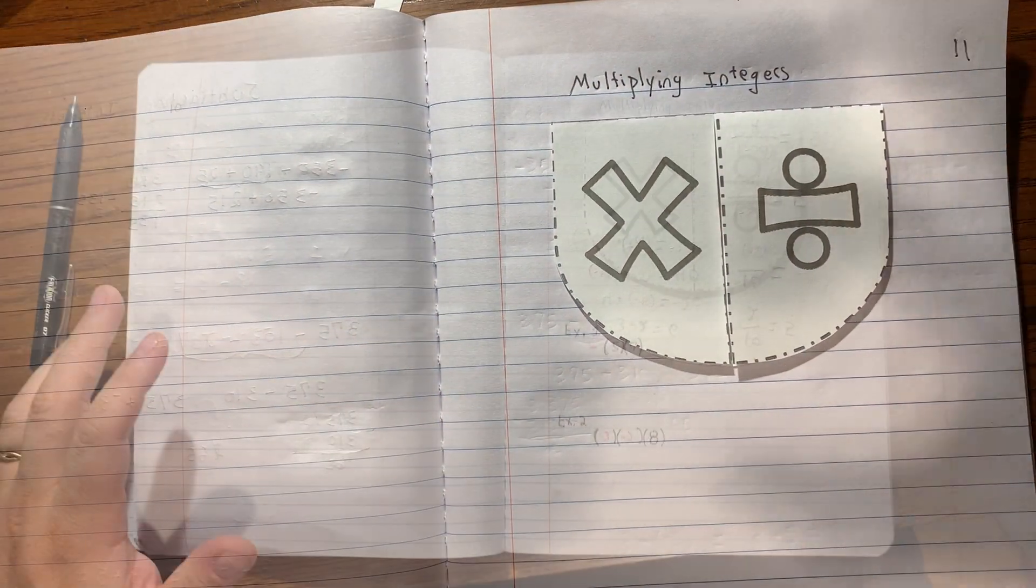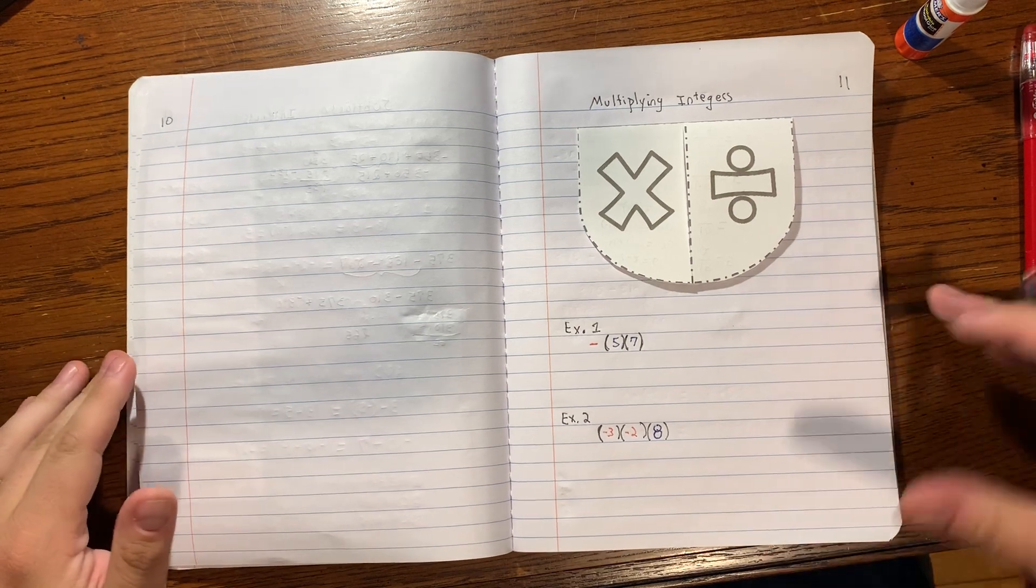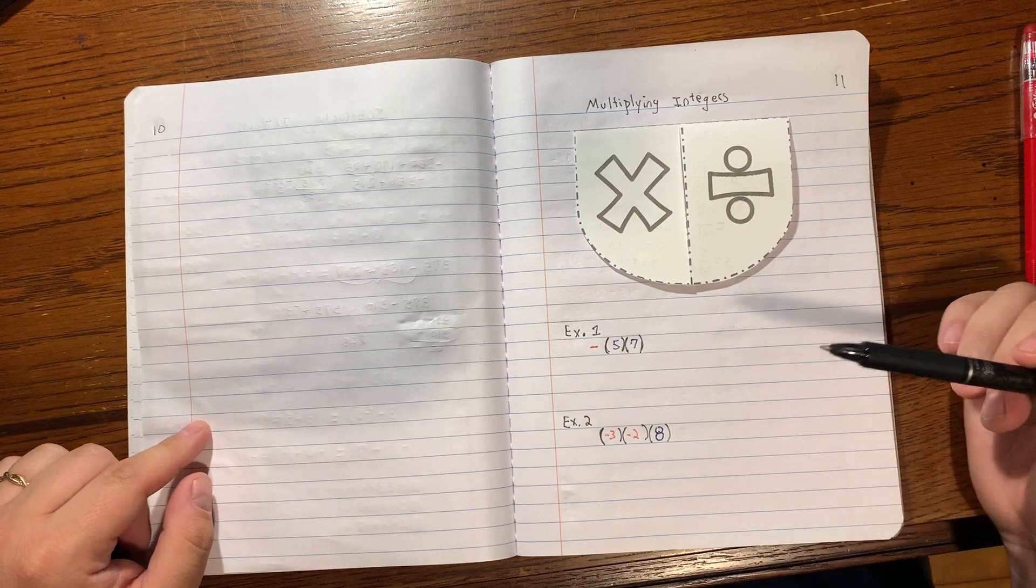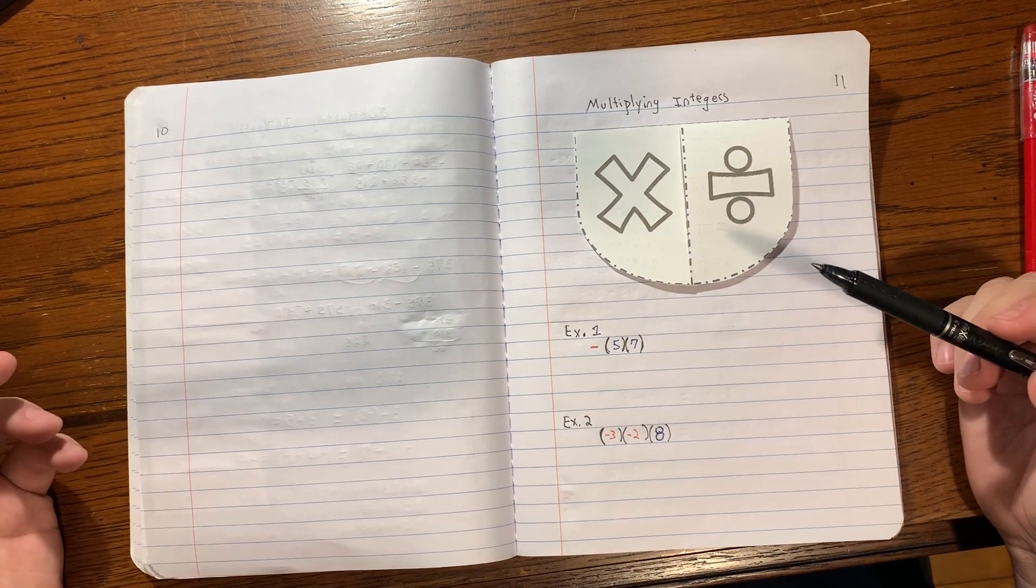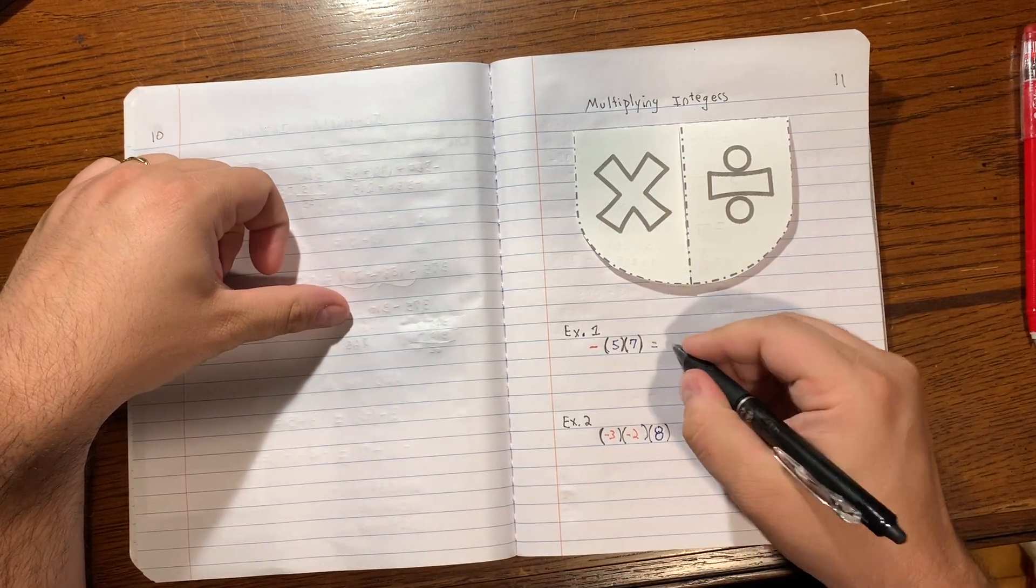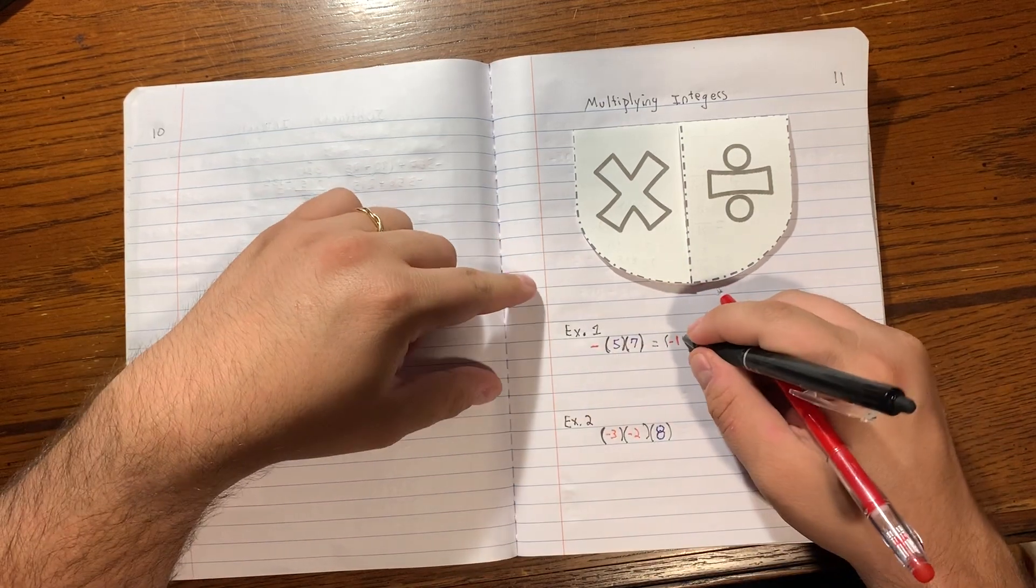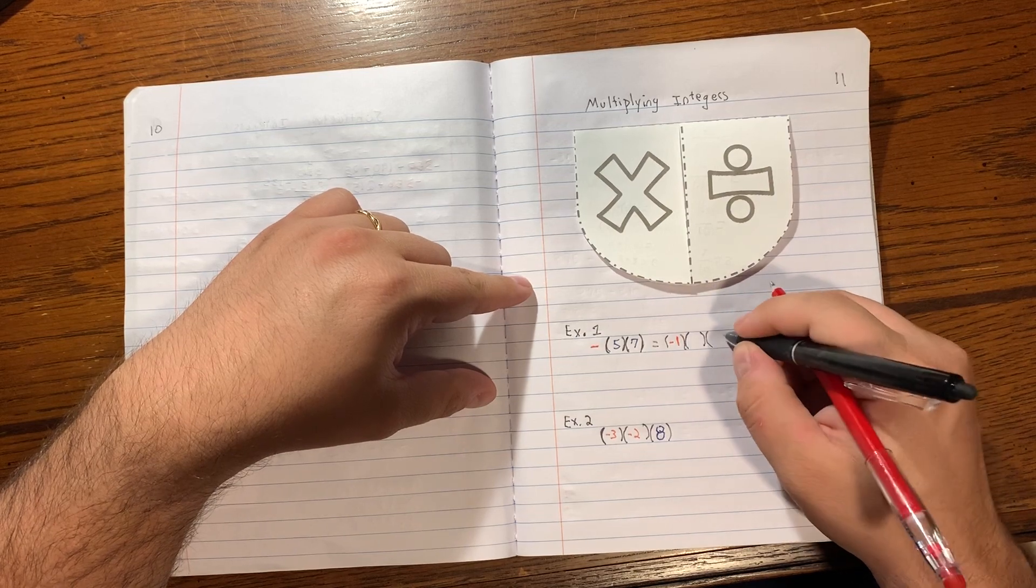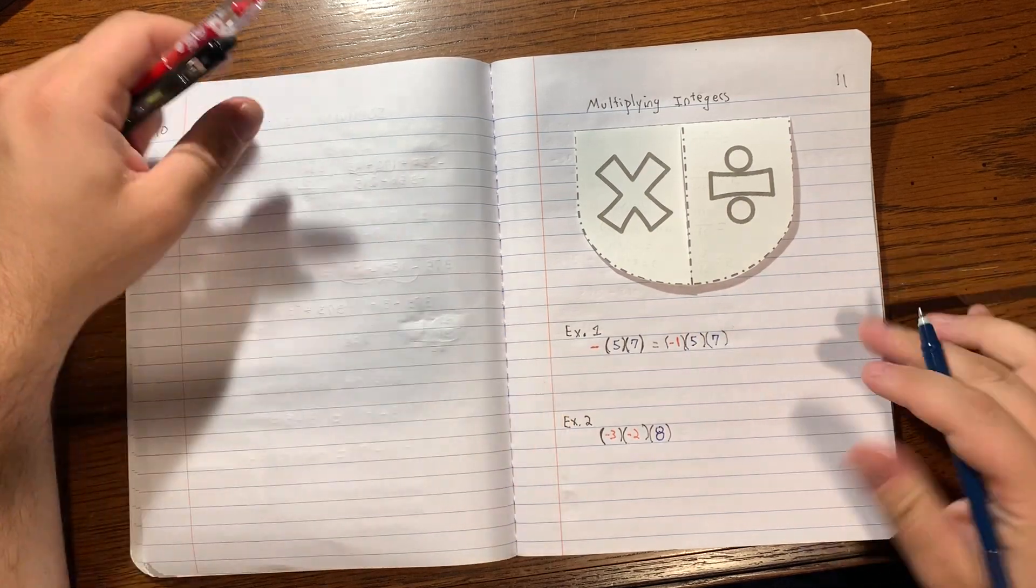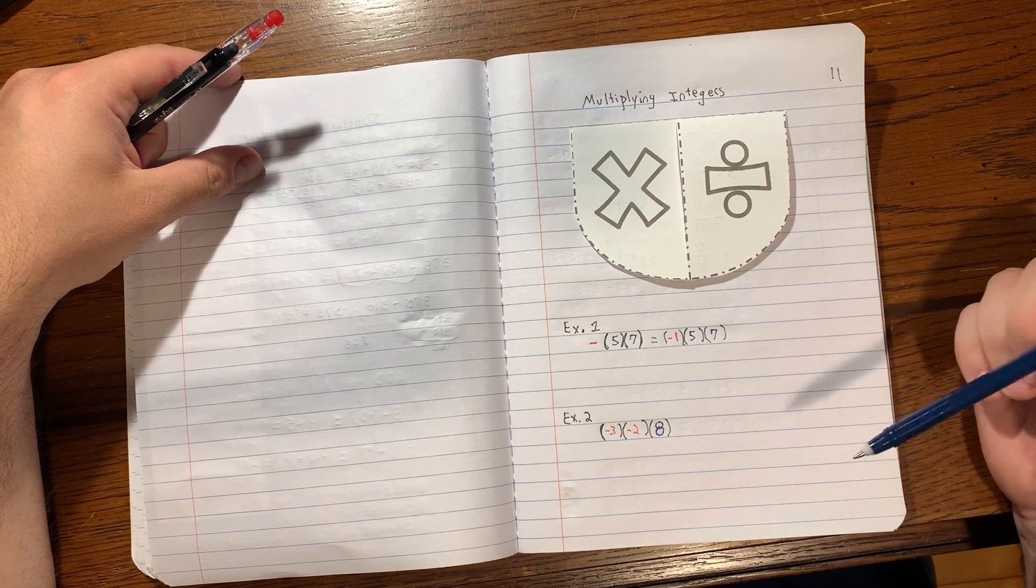All right, I wanted to show you these two examples specifically because they look different than problems that you may have seen before. Right here, for example one, we have negative five times seven. So we have a positive times a positive, that should be a positive number, right? However, look at this negative symbol on the outside. What this means is you're really doing negative one times five and times seven. Now if you didn't learn it in sixth grade, you should know hopefully by now that parentheses when they're next to each other, that means multiplication.